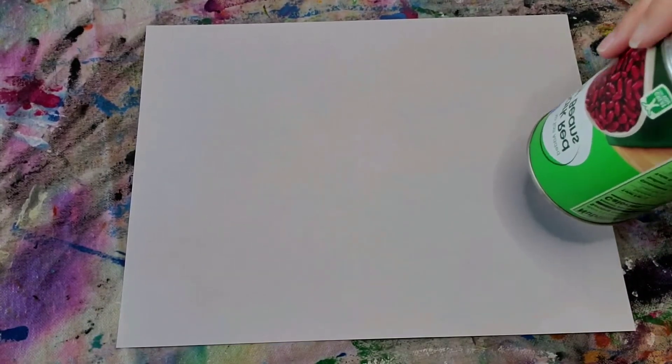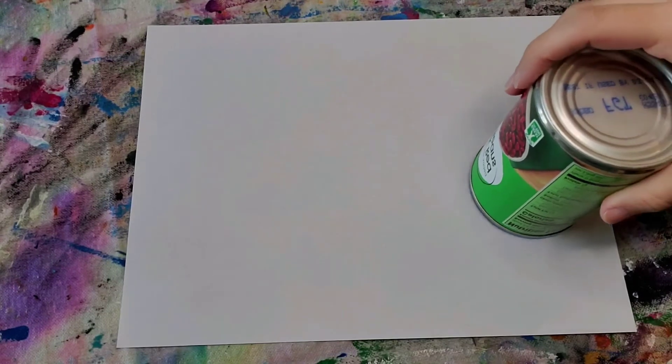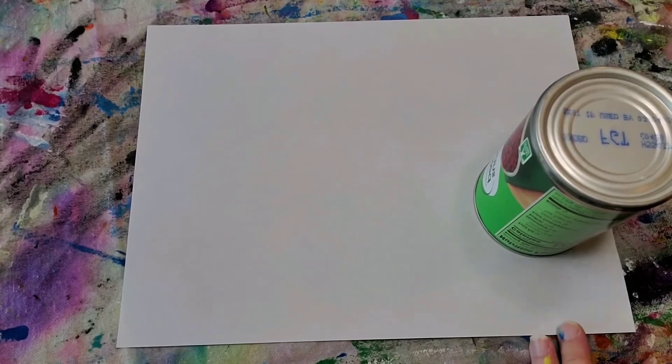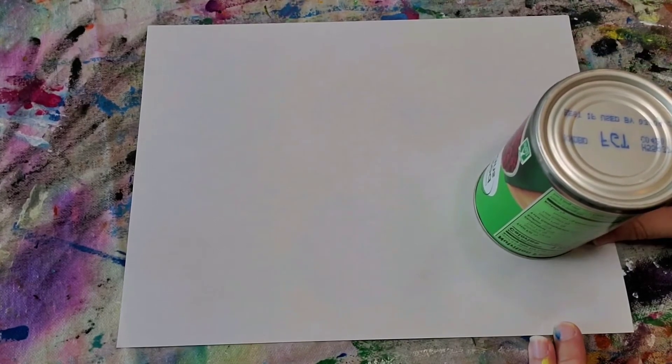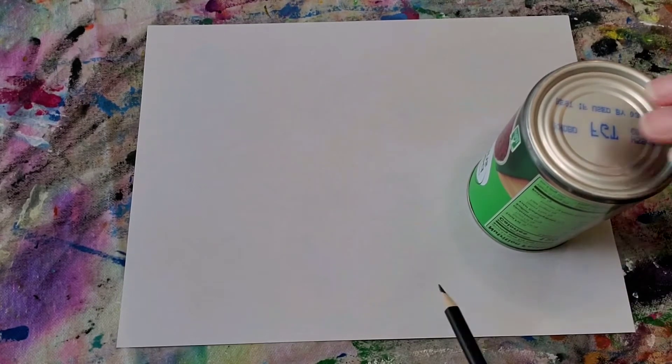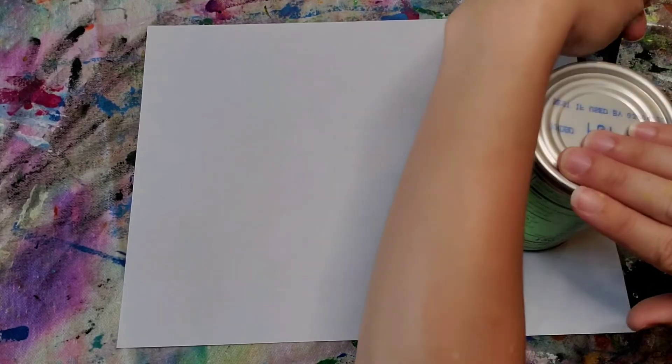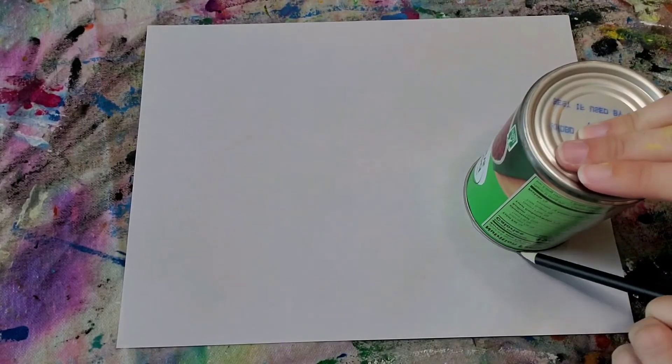We're going to use the top of the can to trace, so raid your cabinet and find something that is round about this size. When you're ready, unpause and let's get creative. I'm going to place my can right about here below the center, about three fingers down, and I'm going to just trace the can. So there's my first circle.